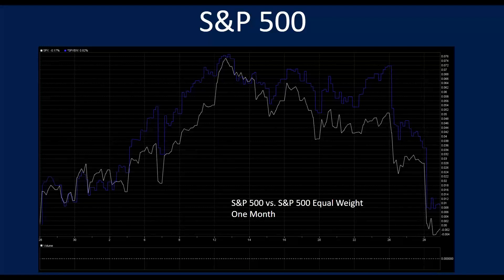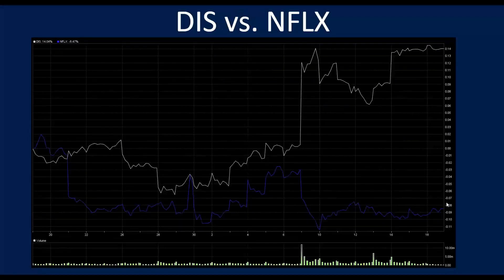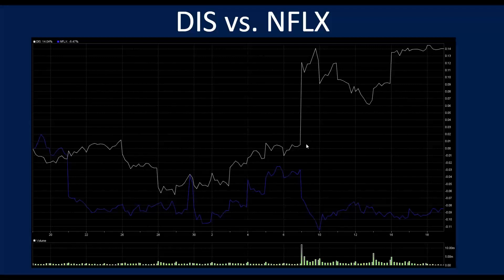This is the S&P 500 versus the S&P 500 equal weight over the past month. The equal weight has outperformed a little bit — the S&P is actually down and the equal weight is down less. We broke out some other stocks to show the reopen versus the continuing pandemic trade. This is Disney versus Netflix, which we've looked at a couple times.